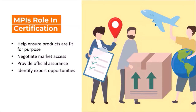MPI's role in certification includes helping ensure products are fit for purpose, negotiating market access, providing official assurances to overseas markets, and identifying export opportunities. Export certificates are issued by MPI and give official government-to-government assurance for products exported from New Zealand. Statements on an export certificate include information like the country of origin of the product and its ingredients, any treatment or process the product has undergone prior to export, and the product's health status — that is, whether there's an animal or plant disease present in New Zealand.